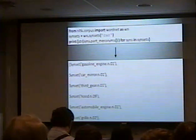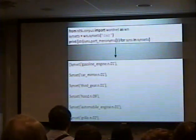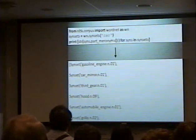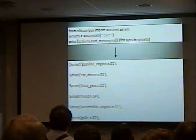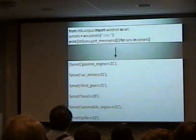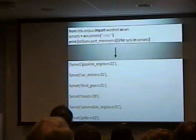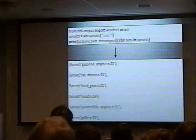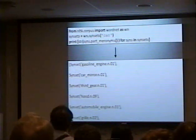The strings it's showing — 'gasoline_engine.n.01' — means it's a noun and it's the first definition of that term. For instance, under 'hood', you see that it's a noun and it's the ninth definition of the noun hood.